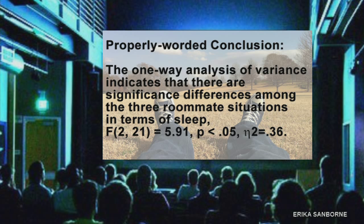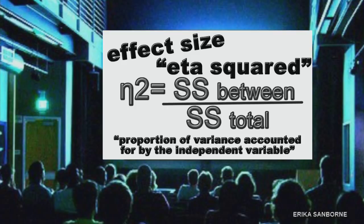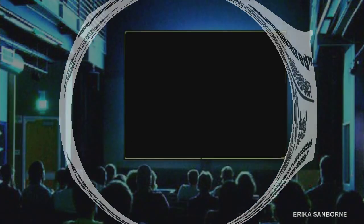By the way, effect size for the analysis of variance is eta squared, and it's computed like you see here, and it represents the proportion of variance accounted for by the independent variable. Again, a lot of the variance is accounted for by chance, with a significant mean difference. Some of the variance between the groups can be attributed to the independent variable. In this case, the roommate situation. The effect size says how much? Remember that statistical significance is just a yes-no question. Yes, there's a significant mean difference. The effect size says how much?